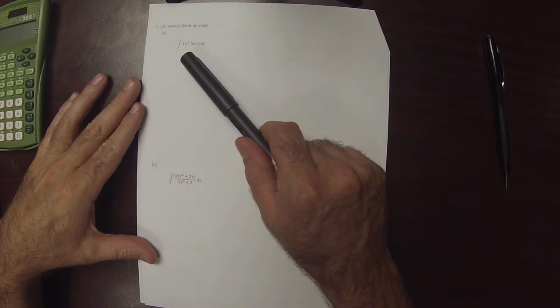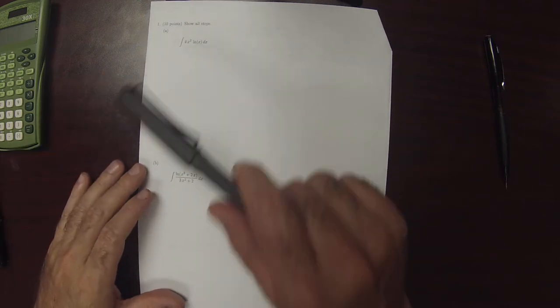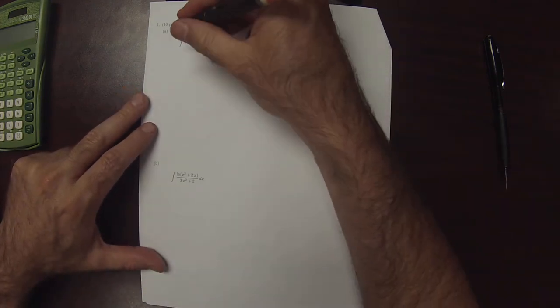Is there something algebraic we can do? No, there's nothing we can do. Is there a substitution we can make? The answer is no. So then by process of elimination, it must be by parts.